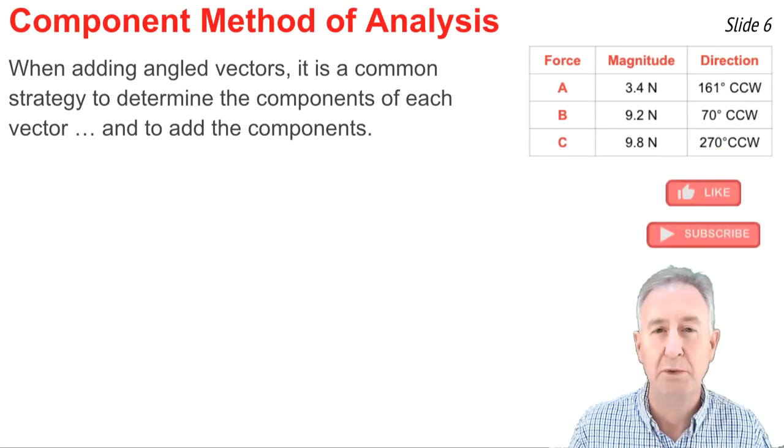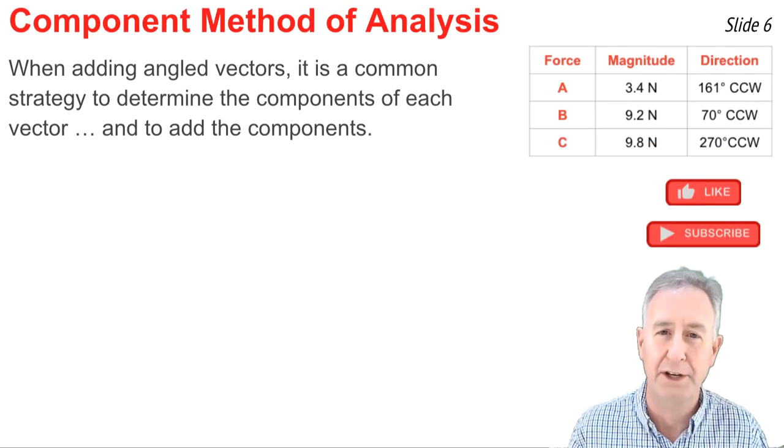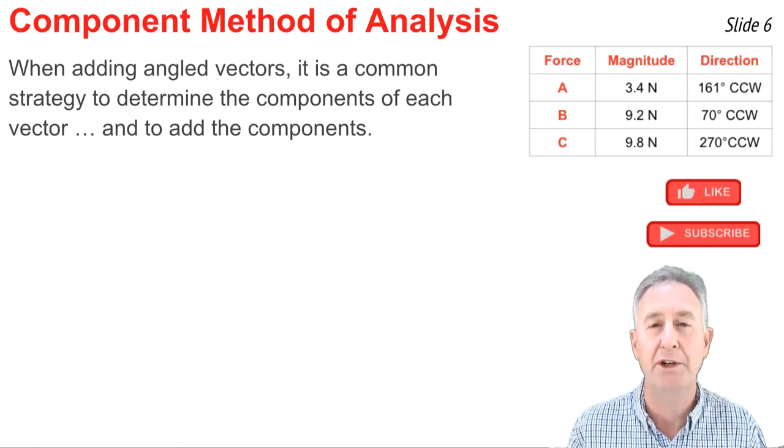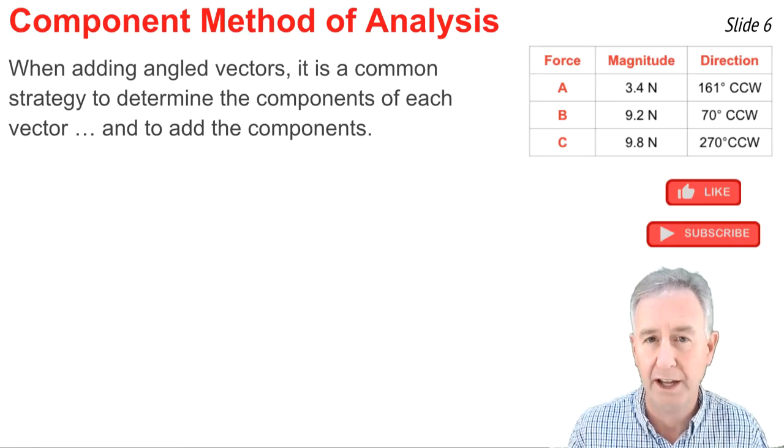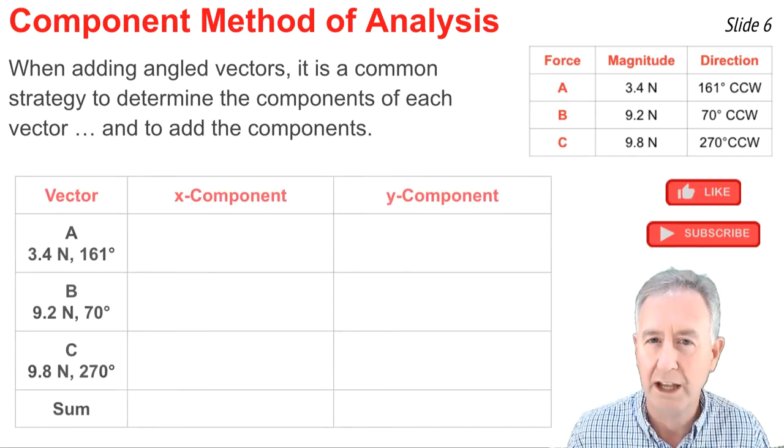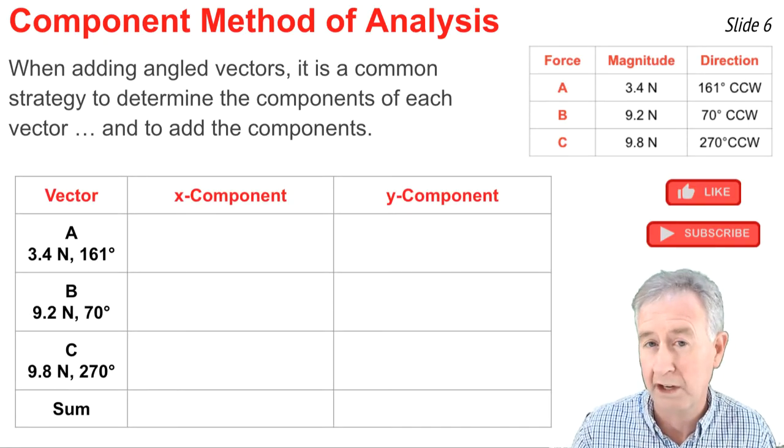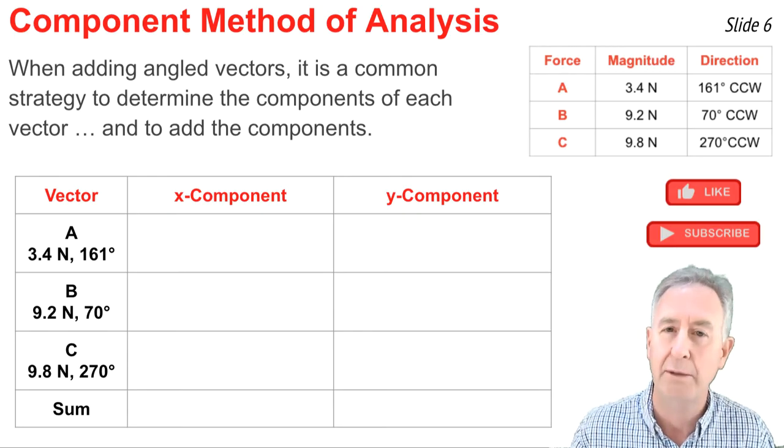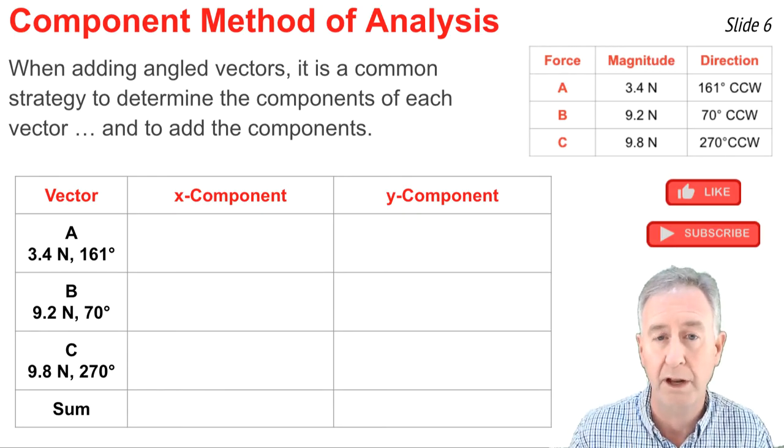The second part of the analysis will involve the component method of vector addition. This is a common method to use whenever the vectors you're adding are at angles to the horizontal or the vertical. I like to use a table like this in order to organize my work. Now, in the table, I have a column for the x component and for the y component.